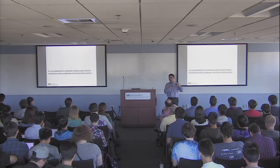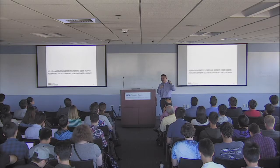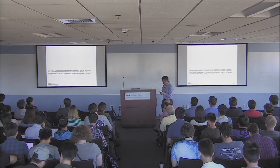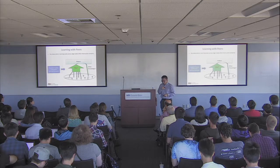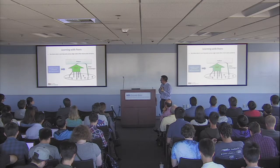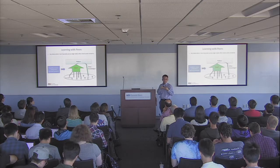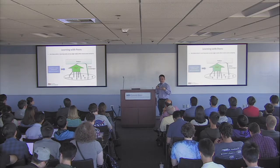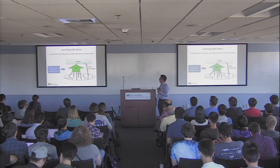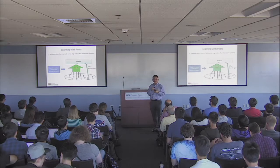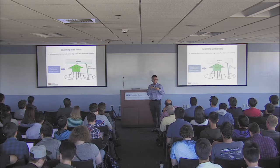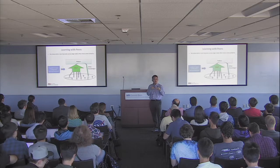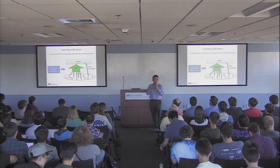Having talked about collaborative learning between edge and the cloud, next we look at collaborative learning across edge nodes. This study is about learning with peers and learning from peers, based on the key observation that many learning tasks in proximity often share some kind of similarity. For instance, in smart manufacturing, robots in one plant each have their own learning task, but those tasks have similarities.